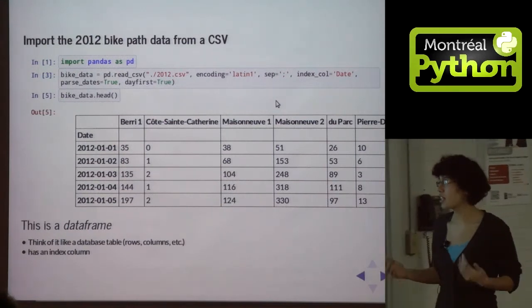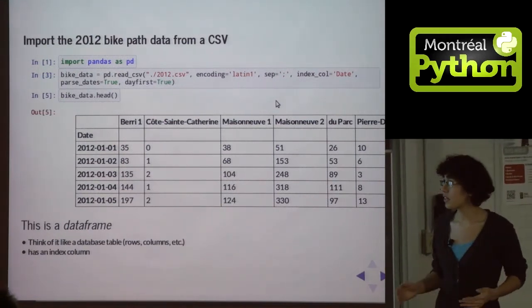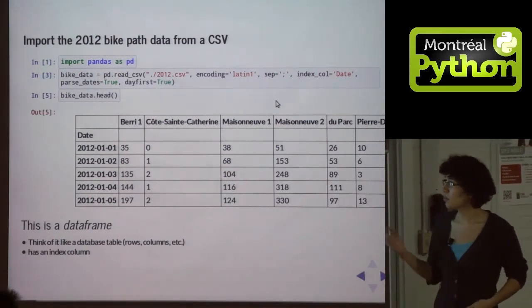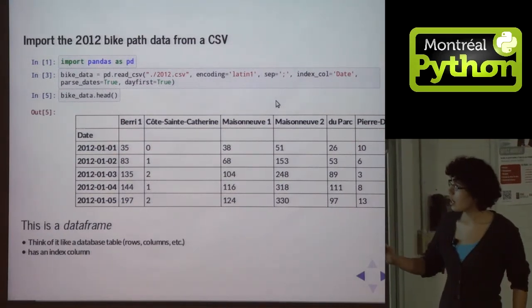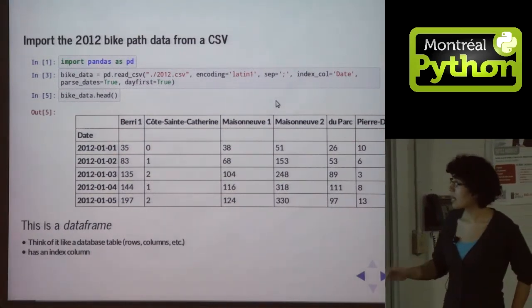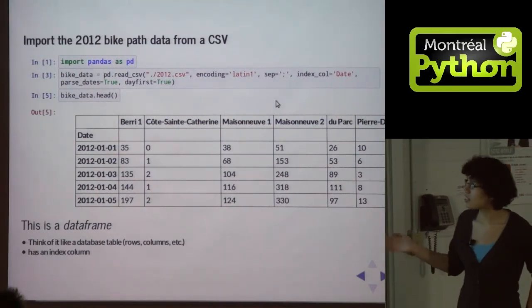which if you know R, is like an R data frame. If you don't, you can think of it as like a database. So there are rows, there are columns. There's one row for each day of the year, and there's one column for each bike path. So there's seven bike paths.